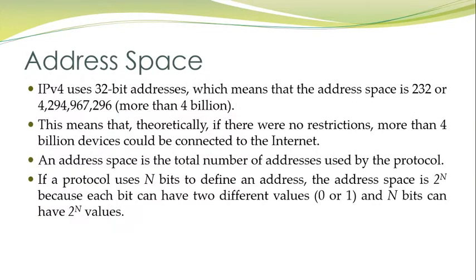Address space for IPv4 addresses: IPv4 uses 32-bit addresses, which means that the address space is 2^32, or more than 4 billion. This means that theoretically, if there were no restriction, more than 4 billion devices could be connected to the internet. An address space is the total number of addresses used by the protocol. If a protocol uses n bits to define an address, the address space is 2^n, because each bit can have two different values, 0 or 1, and n bits can have 2^n values.